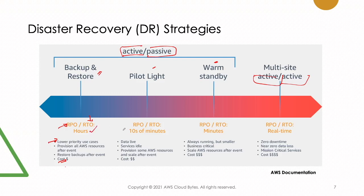Pilot light involves live data with real-time replication, but your services are not running in both regions simultaneously — there may be some downtime to get services up and running. It is higher in cost than backup and restore, but much faster to recover. Warm standby is also quite fast because there is always a smaller set of business applications running in the DR region. You just need to scale to production level, since it may not be running all services at full production scale.